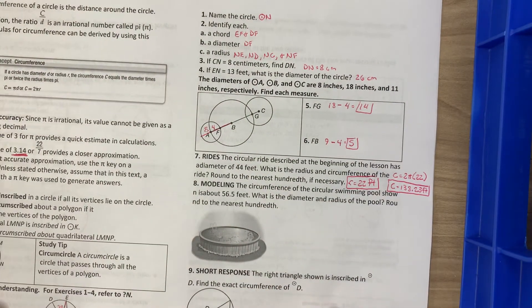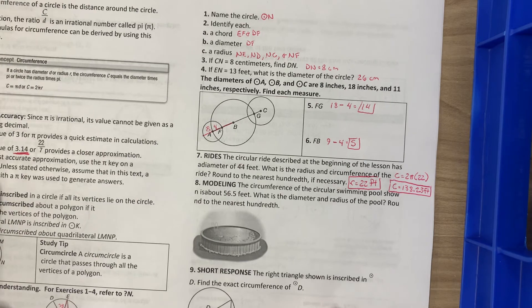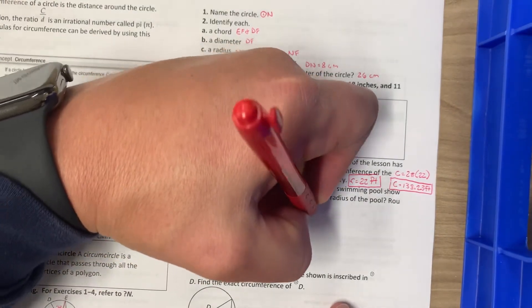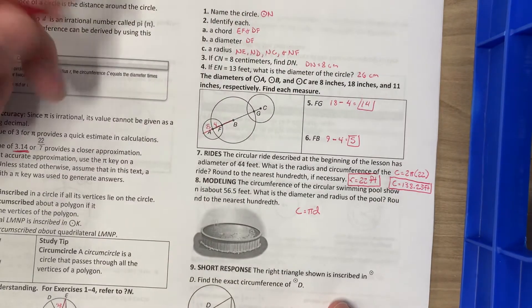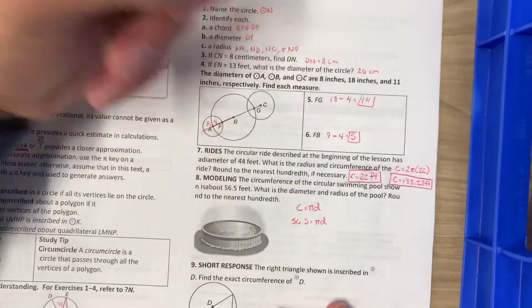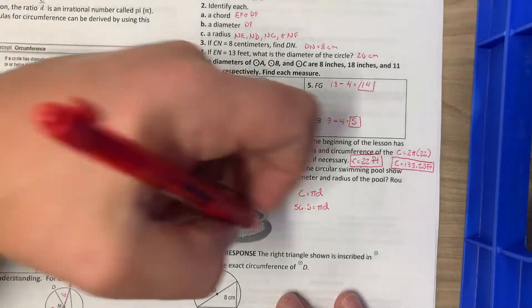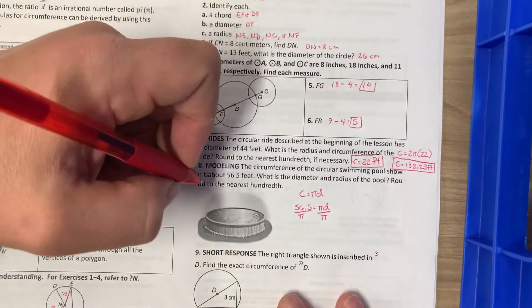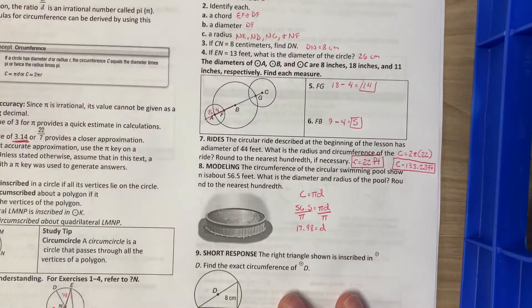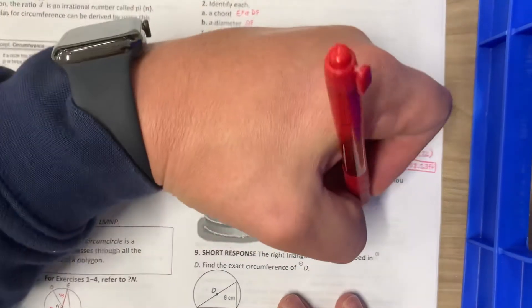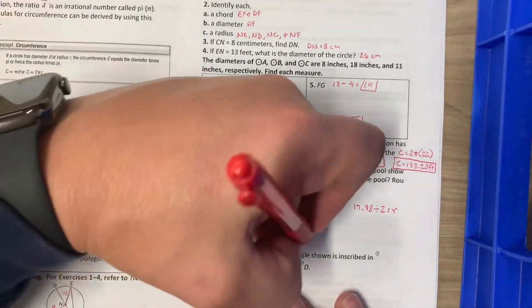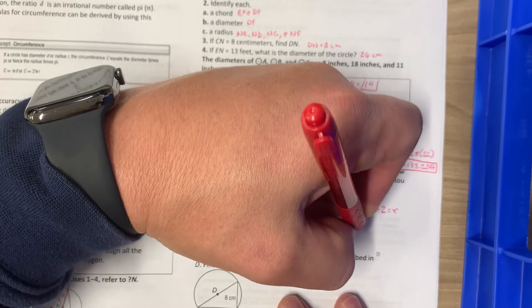The circumference of the circular swimming pool shown is about 56.5 feet. What is the diameter and radius of the pool? Round to the nearest hundredth. This time they gave us the circumference. We're going to use C equals pi D. Circumference is 56.5 equals pi D. Pi is just a number, so we can divide by pi. 56.5 divided by pi is 17.98, and that is equal to our diameter. To find the radius, we just divide this by 2. 17.98 divided by 2 would equal R, so R equals 8.99.